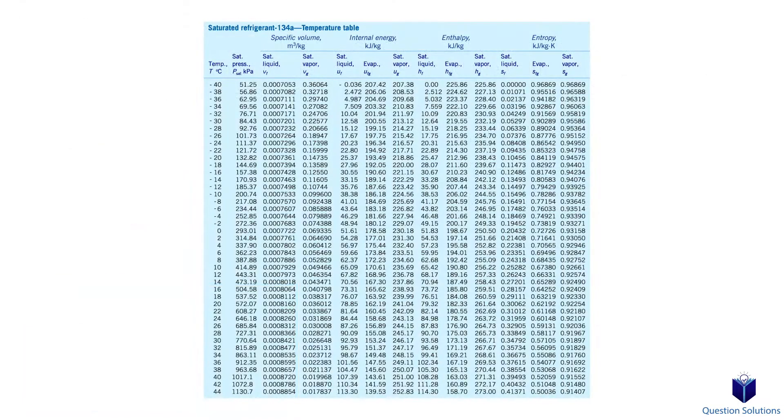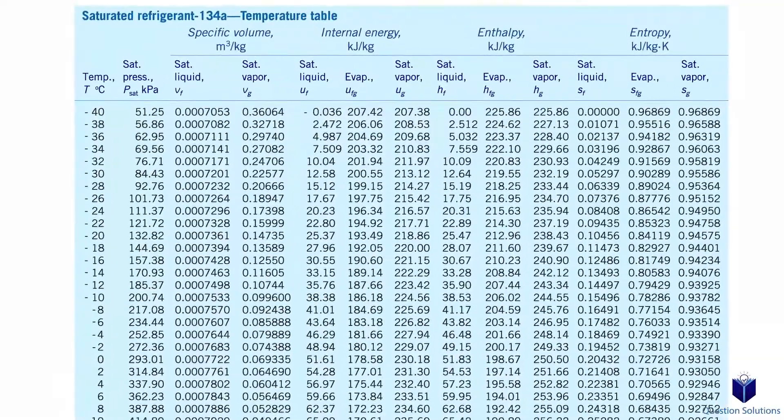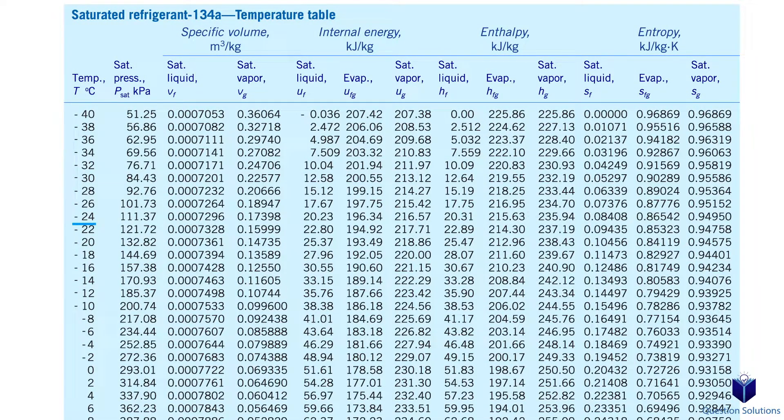We can find that from the refrigerant table. Our initial temperature is negative 24 degrees celsius and it's the saturated vapor. So our enthalpy value is right here. For the second part of our question, we're going to need the specific volume value. And since we have the table up, we can write that down as well. That's the value right here.